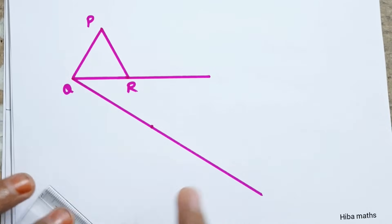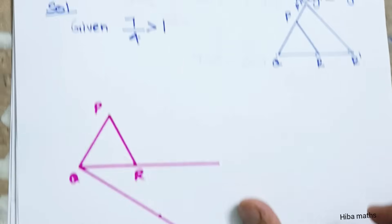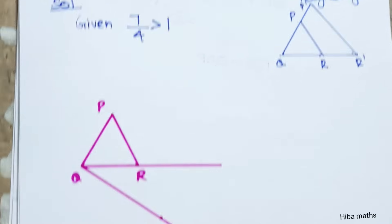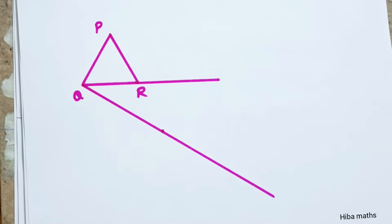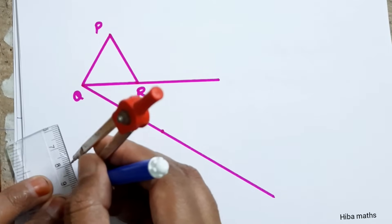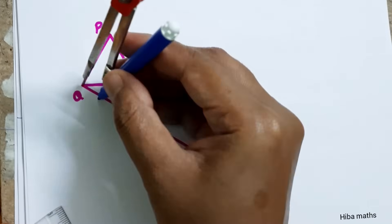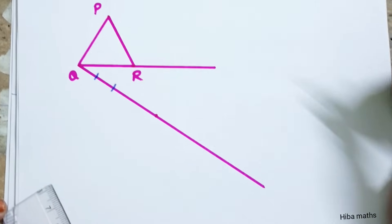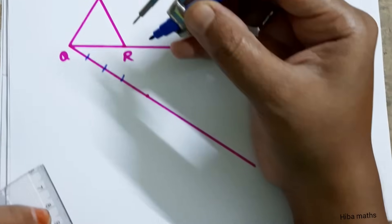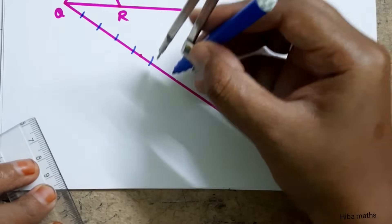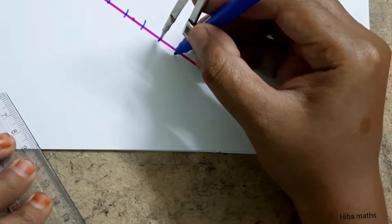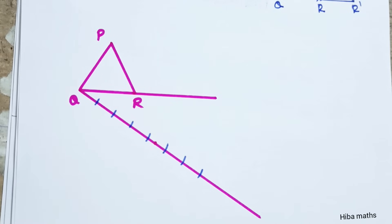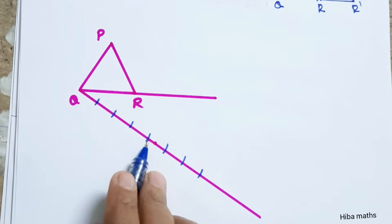Now we have 7 divisions. Why 7? Because we have 7 by 4, so we divide 7 times on the ray line. We use the compass set to 1 or 1.5 cm and mark equal arcs: 1, 2, 3, 4, 5, 6, 7 times. Now, since we have 7 by 4, the 4th point is our key reference point.